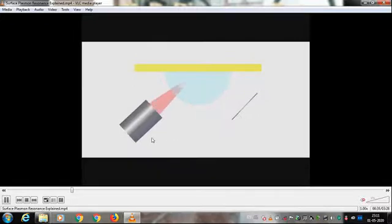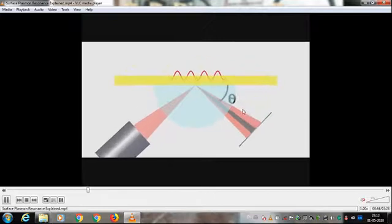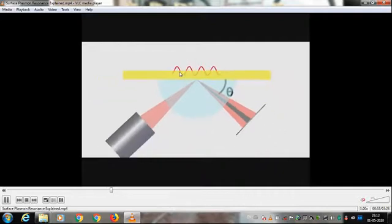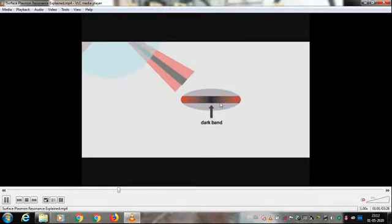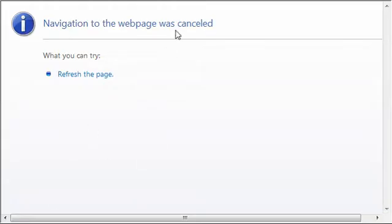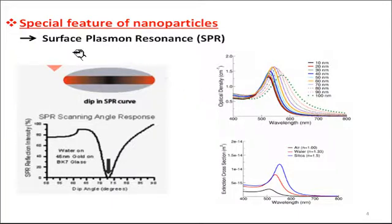In the animation, you can see all the arrangement required for the SPR technique. Light passes through the prism and is reflected back to the detector. At a certain angle theta — the SPR angle — some portion of light is absorbed by the surface electrons. You can see the light absorption pattern and a dip in the SPR curve as a dark band. Alternatively, we can also get absorption maxima at a certain wavelength as an SPR peak in the UV-visible spectra.